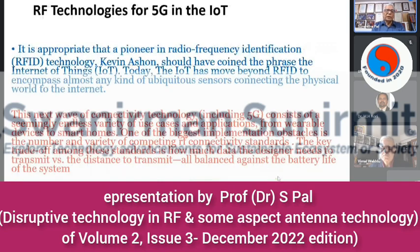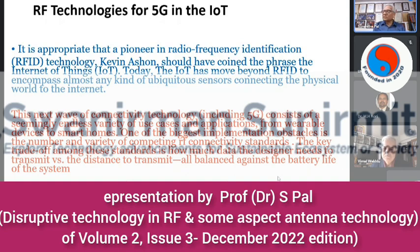Kevin Ashton, a pioneer in radio frequency identification technology — RFID — coined the phrase 'Internet of Things.' Today IoT has moved beyond RFID to encompass almost any kind of ubiquitous sensors connecting the physical world to the internet — including a chip put into a pet dog's skin. Similar chips may be put in individuals so that all health parameters are available, and a doctor can scan and get everything, modifying them as needed.